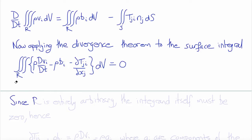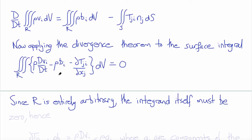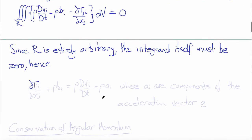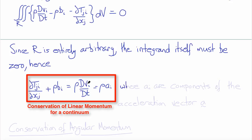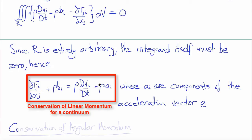Now, since the region R over which this integral must hold is entirely arbitrary — it must hold for any and all regions — the integrand itself must be zero. Hence we obtain the familiar differential form of the conservation of linear momentum: del T_ji / del x_j plus rho B_i equals rho times the material derivative of velocity, which is the acceleration — rho times a_i, where a_i are components of the acceleration vector. So surface forces plus body forces equals inertial forces.